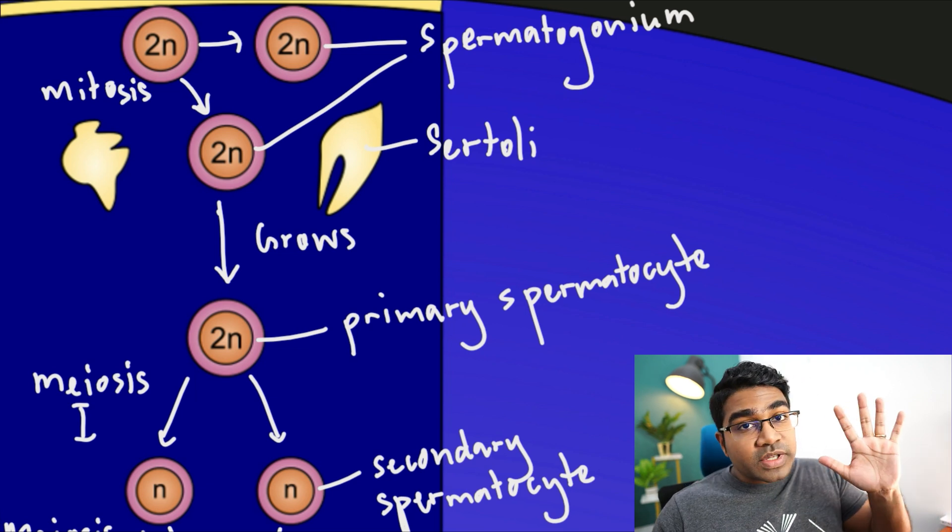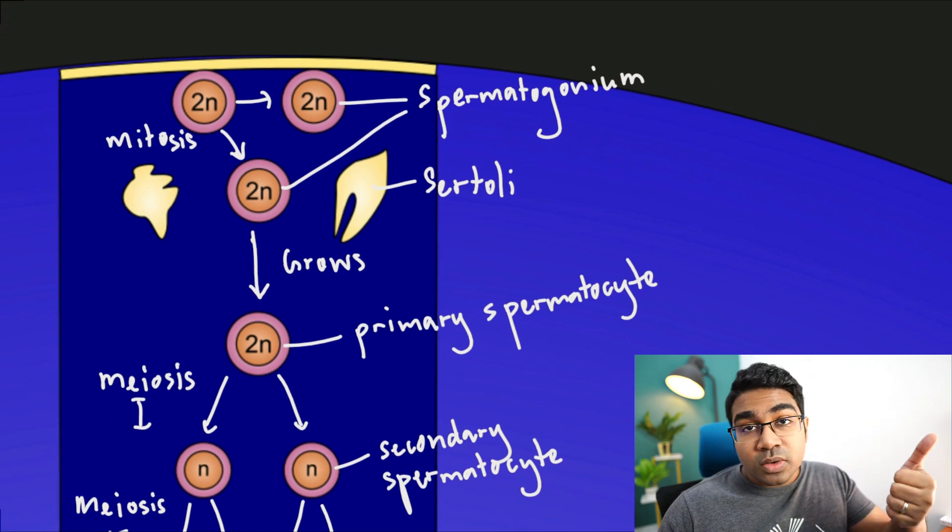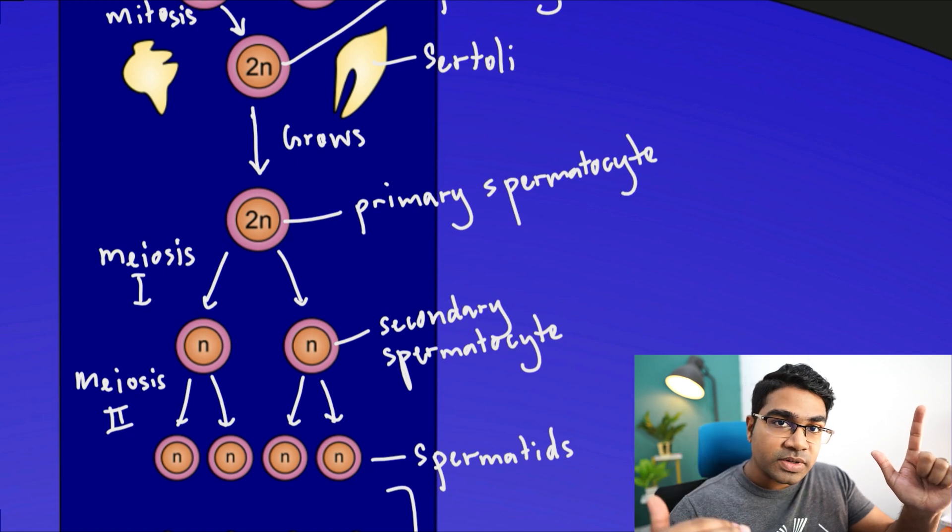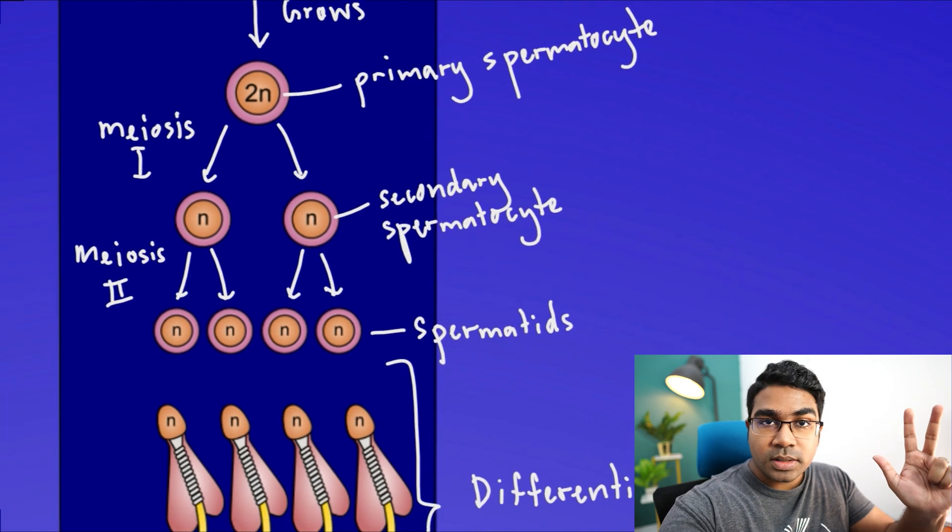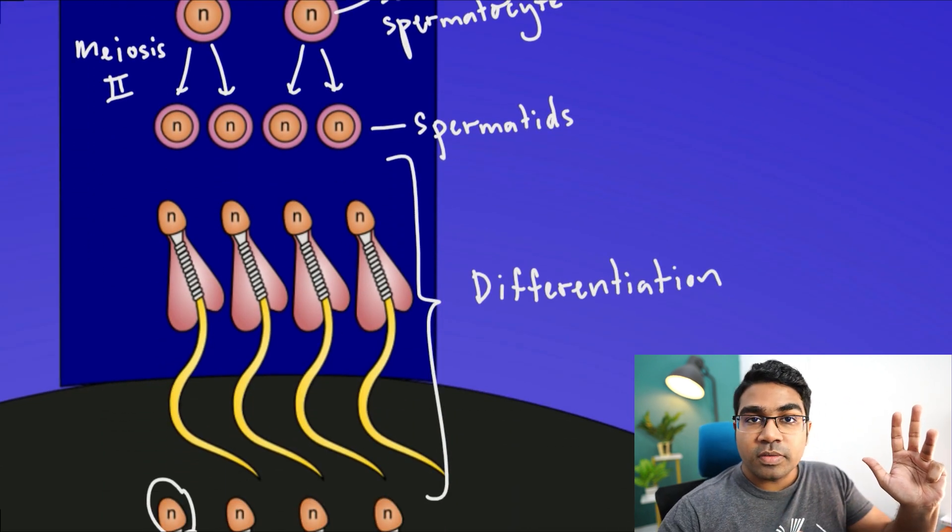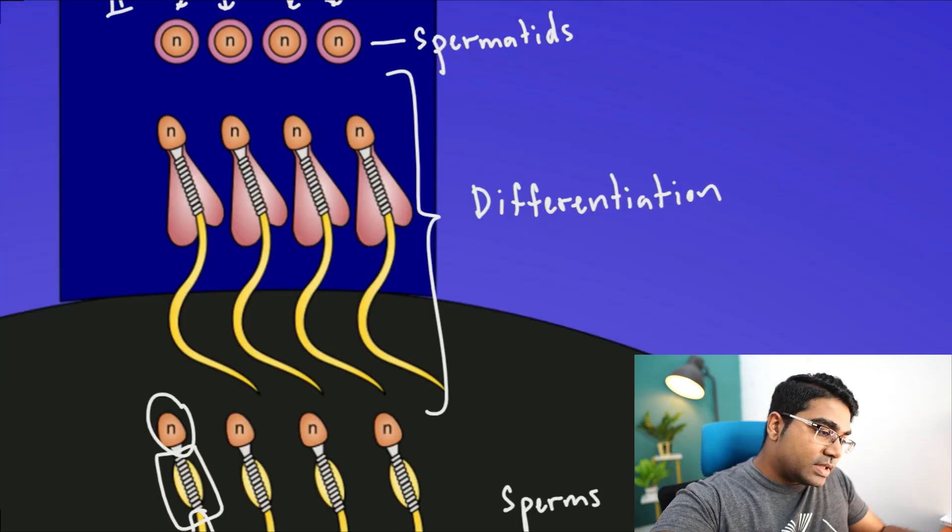Let's go through the five processes that take place here. We begin with mitosis in the production of the spermatogonium, then growth into the primary spermatocyte. From the primary spermatocyte we have meiotic division: meiosis I, meiosis II, and then the spermatids undergo differentiation to finally form four sperm cells.